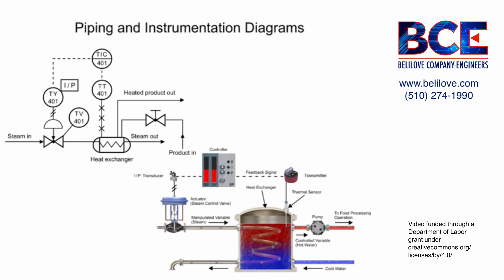The controller output is connected to the transducer that controls the steam flow, indicated by the second letter Y of the functional identifier. The transducer converts an electronic signal to a pressure signal and is indicated by the square containing the letters I and P.